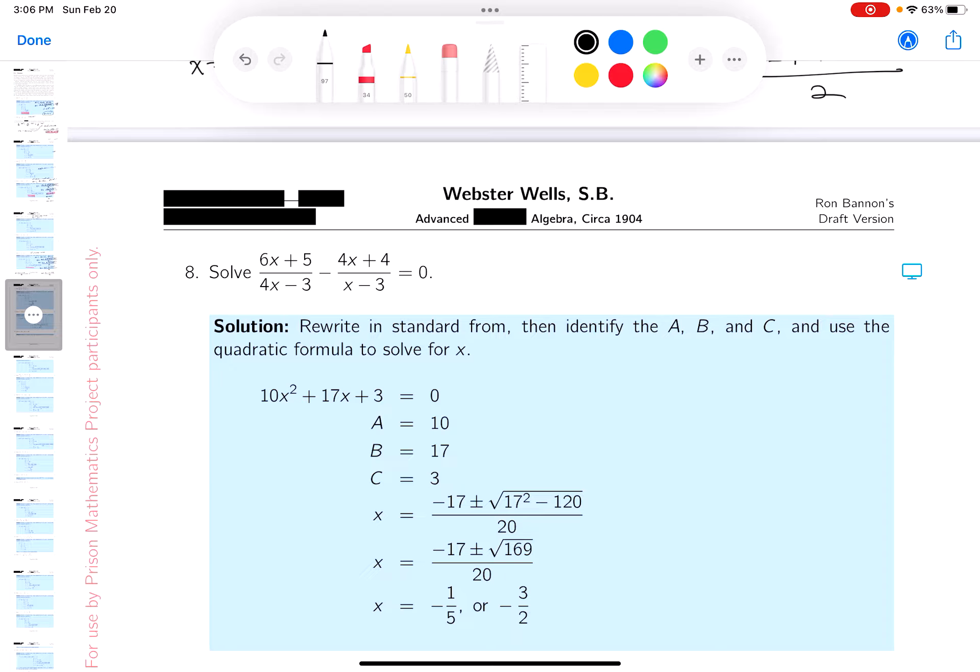Okay, my suggestion is to clear the fraction by multiplying both sides of this equation, or every term, by the LCD. The LCD, by inspection, is 4x minus 3x minus 3. Let me do that for you without too much writing.